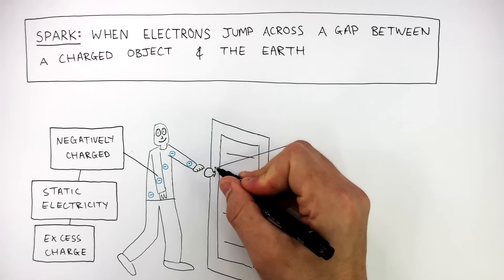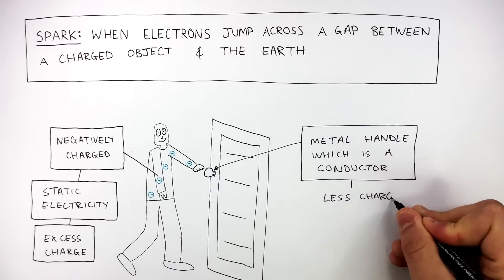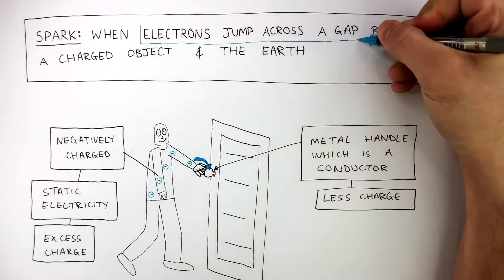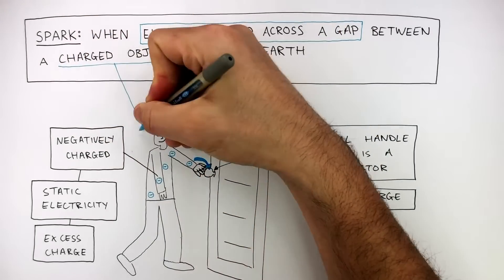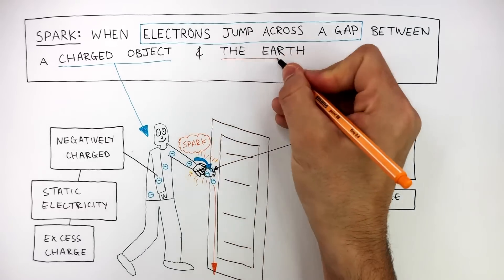This has happened because of friction between the person's jumper and the rest of their clothes and their body. The person touches a metal handle which is a conductor and has less charge compared to the person. So the electrons jump across a gap from the person — the charged object — to the door which has less charge, and the person feels a spark to the earth.